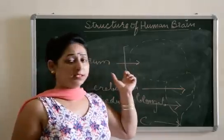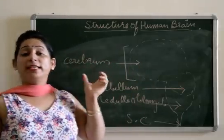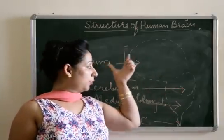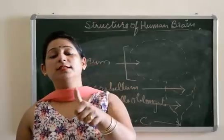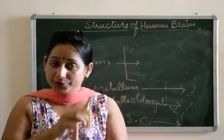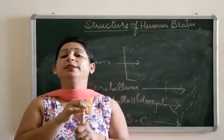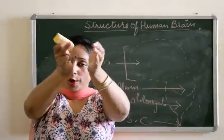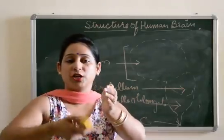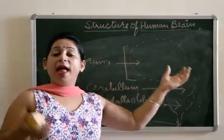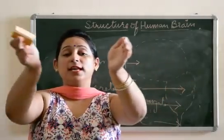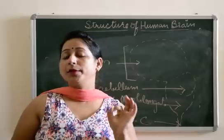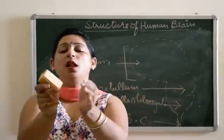Next comes the cerebrum. Cerebrum is the largest part of the brain, and it is divided into two cerebral hemispheres. There are two cerebral hemispheres which are joined together to form the large structure known as the cerebrum. These two hemispheres are joined together by a central part known as the corpus callosum. Corpus callosum is the structure which joins the two cerebral hemispheres.